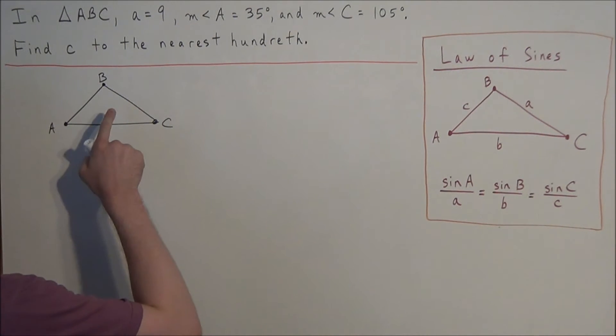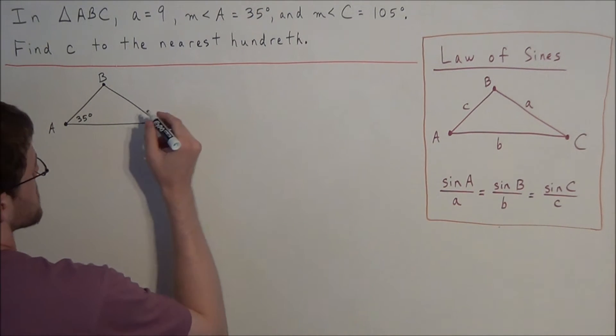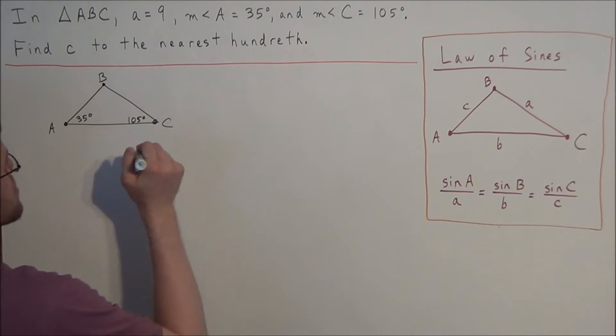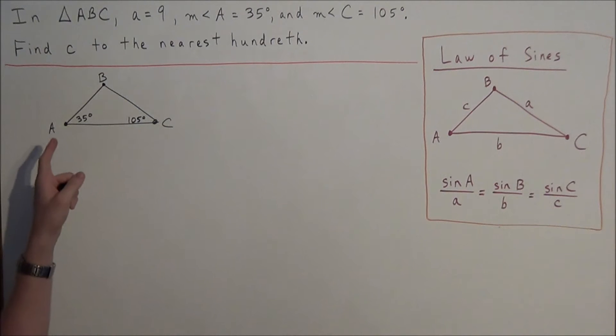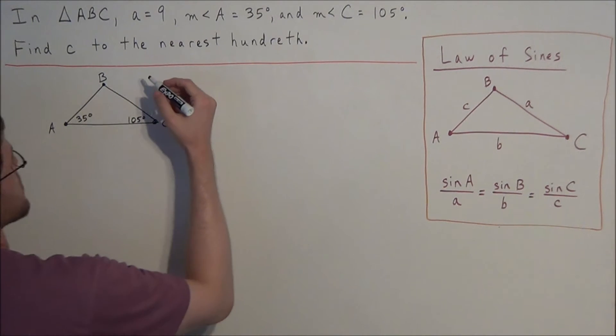And we know that the measure of angle A is 35 degrees, so we can label this angle here 35 degrees. And we have the measure of angle C is 105 degrees. And we're also told that the length of side a, which is located opposite of angle A, is equal to 9.